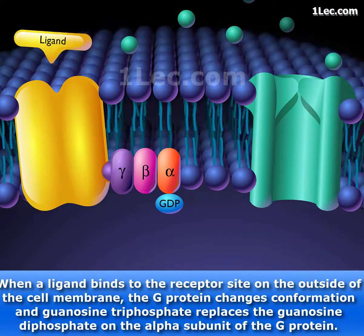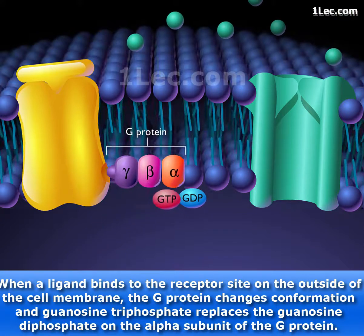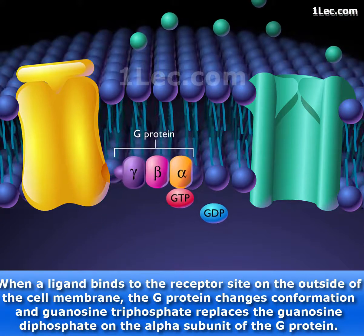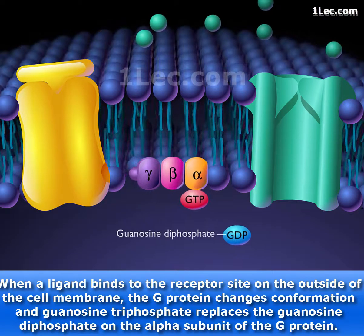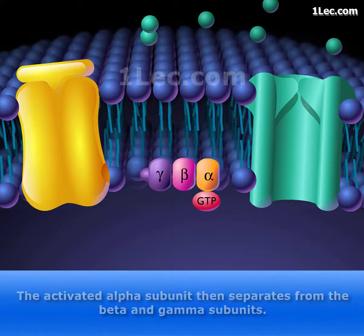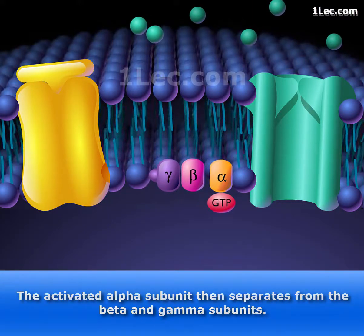When a ligand binds to the receptor site on the outside of the cell membrane, the G-protein changes conformation and guanosine triphosphate replaces the guanosine diphosphate on the alpha subunit of the G-protein. The activated alpha subunit then separates from the beta and gamma subunits.